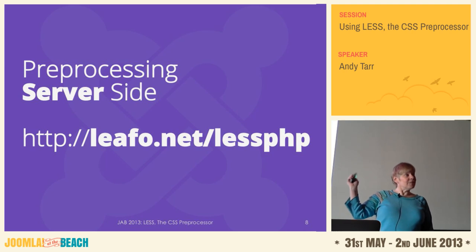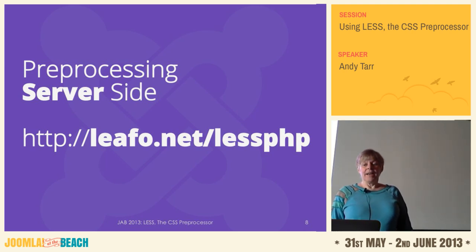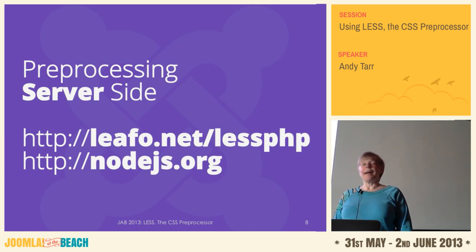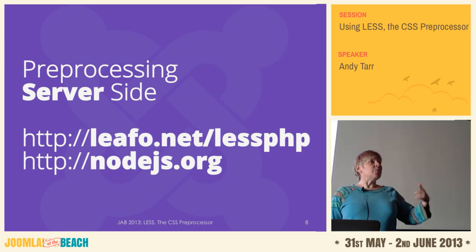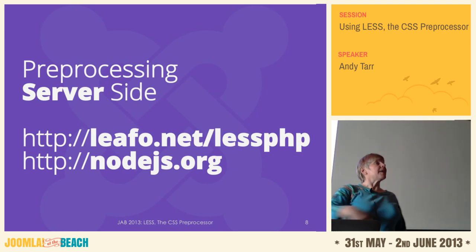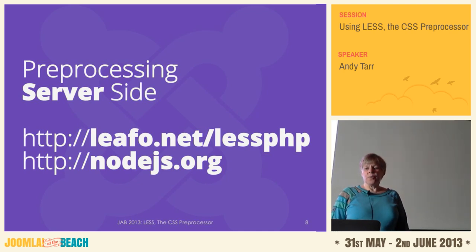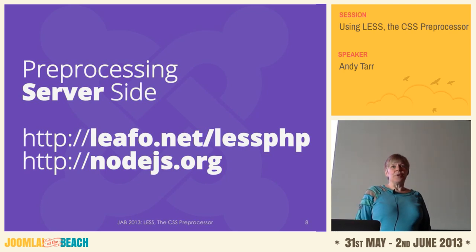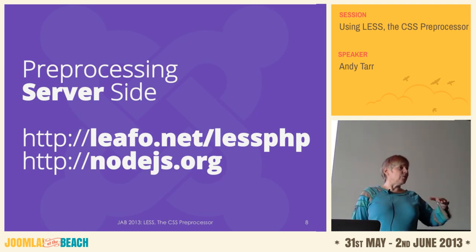There are a number of different processors you can use. They actually have a PHP version, and one from Node.js - this is the common one I'll be using in this demonstration. If you have a Mac, they've got CodeKit that lets you set it up so that whenever you change one of your LESS files, it automatically in the background does the preprocessing for you and creates the CSS files. To get the Node.js compiler, first install Node.js from nodejs.org.